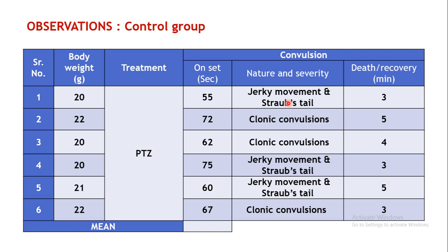The types of convulsions observed are recorded for each animal. Animal 1 shows jerky movements and Straub's tail; animals 2 and 3 show clonic convulsions; animal 4 shows jerky movements and Straub's tail; animal 5 similarly; and animal 6 shows clonic convulsions. The recovery time or death time — that is, the time after which the animal either dies or recovers from the convulsions — is also recorded. The parameter being compared is the onset of convulsions: how long after PTZ administration convulsions begin. The average of all six onset values is calculated.